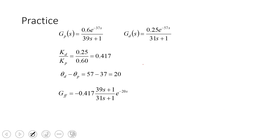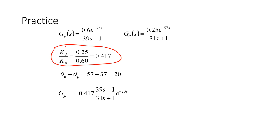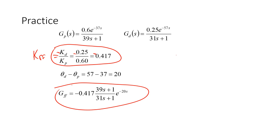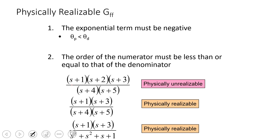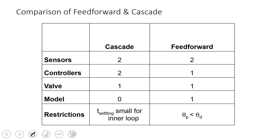For the practice problem, the static feedforward gain K_ff is the negative ratio of the disturbance gain to the process gain. For the dynamic feedforward controller, the full transfer function result is obtained by taking the ratio. Note that if there is a higher-order polynomial in the numerator than the denominator, the feedforward controller is physically unrealizable. A first-order plus dead time approximation can sometimes be used in that case.